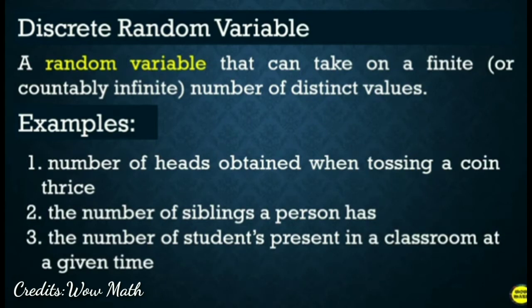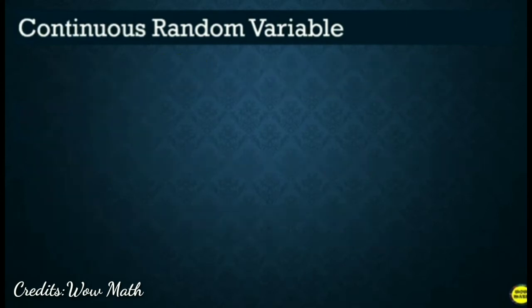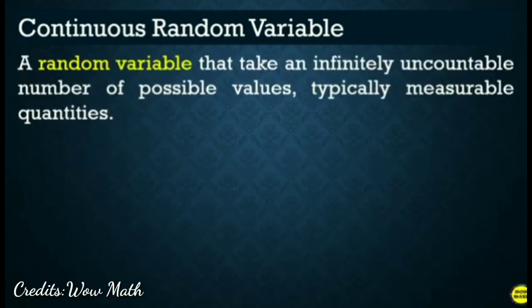And then, anong pinagkaiba naman nung continuous random variable sa discrete random variable? So, tandaan, kapag random variable, it's a finite or countably infinite. Pag continuous random variable, a random variable that take an infinitely uncountable number of possible values. Typically, measurable quantities. So, it's about what? Measured data. A random variable represent measured data.